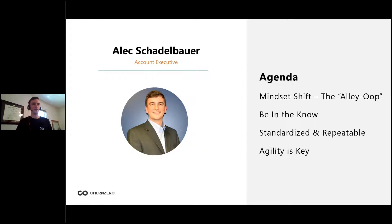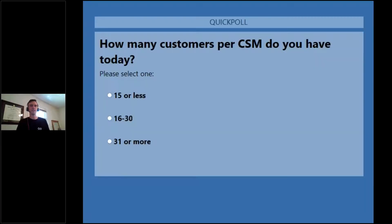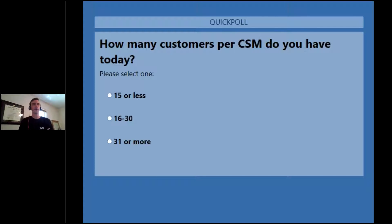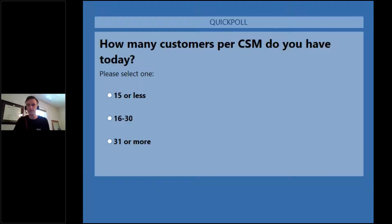Without further ado, let's hop into it. I'm going to start with a poll question to get a sense of the room. The definition of high touch is going to be different for everyone — for some people it's a CSM team, for some it's account managers or client success managers. What I wanted to get a sense of is how many customers are you all working with per rep: is it less than 15, somewhere in the 16 to 30 range, or do you have 30 or more accounts per rep?